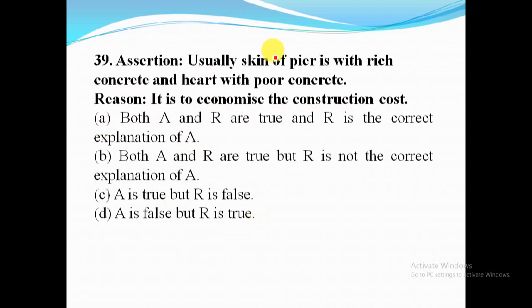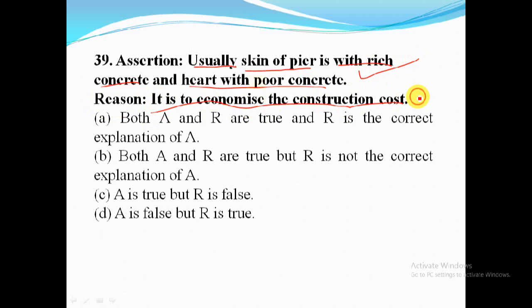Assertion A: usually the skin of a pier is built with rich concrete and the heart with poor concrete — correct. Reason R: this is done to economize the construction cost — correct and the correct explanation of A. So option A — both A and R are true and R is the correct explanation of A — is the answer.